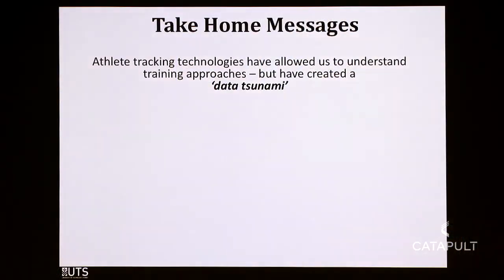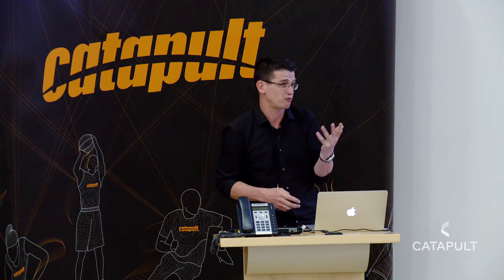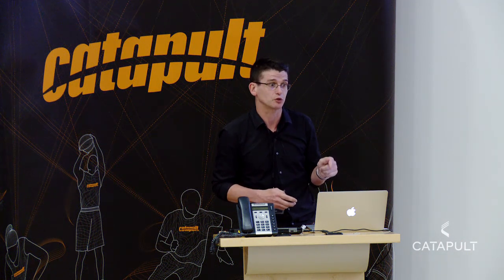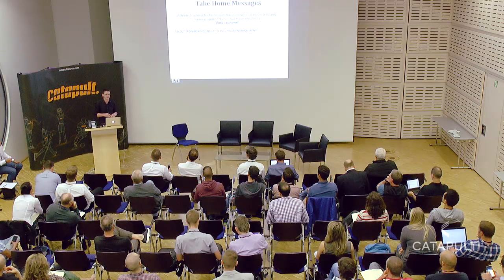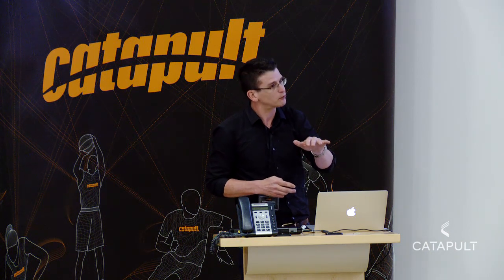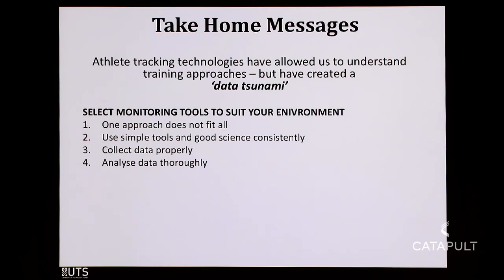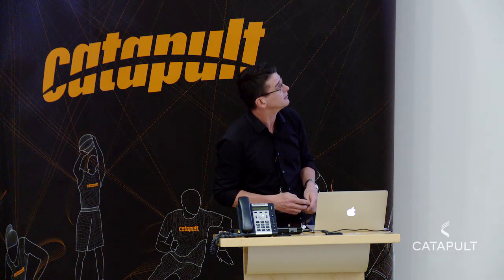The take-home message: athlete tracking technologies have allowed us to do a much more precise job than 15 years ago, but it's also created what I call a data tsunami. Just because we have all the data, we don't have to use it all — we measure four or five things in the whole program, but we do it regularly, properly, and analyse it thoroughly. We have a responsibility for parsimony: don't measure things you don't need to measure. Select tools that suit your environment; one approach doesn't fit all. Use simple tools and good science, collect data properly, analyse it thoroughly. The best tools still remain coaching and talking to people. Otherwise, go with wellness measures, session RPE, and external training load — that gives you a good basis for a fundamental monitoring system.